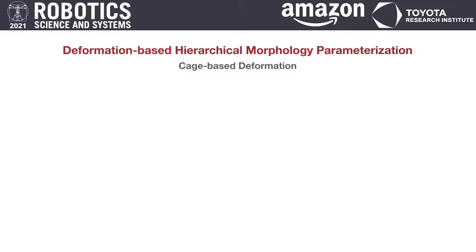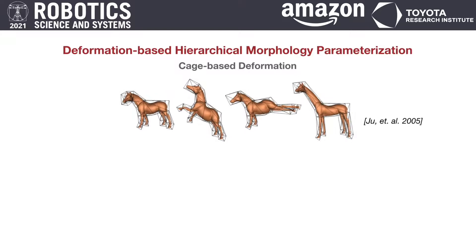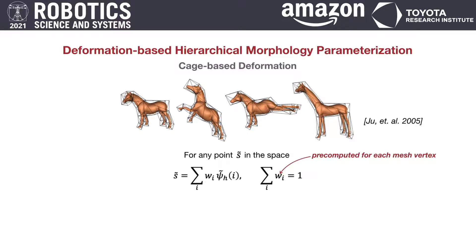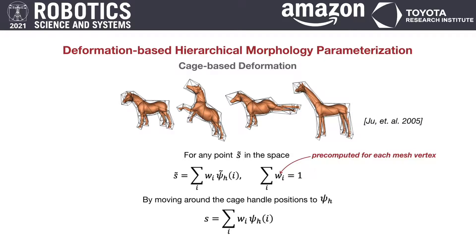Our deformation-based parameterization is based on cage-based deformation methods, which have been widely used in computer graphics to deform a high-resolution mesh in a real-time and feature-preserving manner. By defining a coarse cage around the mesh, it first pre-computes a normalized barycentric weight vector for each mesh vertex to establish a mapping between the locations of the cage handles and the mesh vertices. Then, by moving around the cage handles, the underlying mesh deforms accordingly using those pre-computed weights.